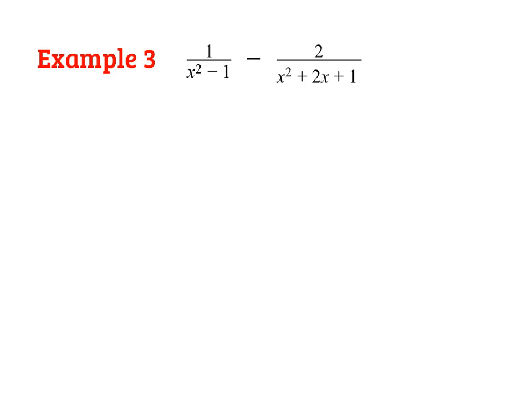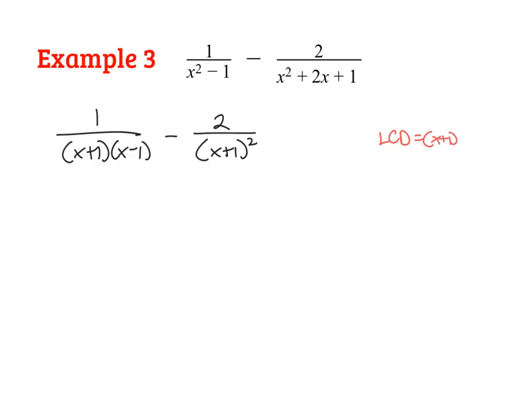Let's do another example — here we are subtracting two fractions. We always start by factoring whenever we can. Let's factor our denominator: we have X minus 2 times X plus 1 squared, or X plus 1 times X plus 1. In order to combine two fractions we need the denominators to be the same, and clearly they're not. So on the side I'll write out the LCD. The LCD is X plus 1 squared times X minus 1. X plus 1 squared covers this factor, and X minus 1 came from our first fraction.